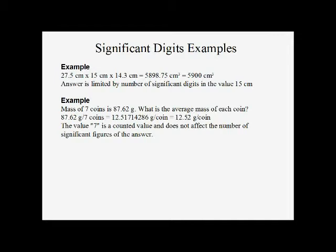If we weigh seven coins and want the average mass, where total mass is 87.62 divided by seven coins — seven coins is a counted number, so it is unlimited in significant digits. We have four significant digits from our 87.62. Our calculator gives a long number, but we round down to four significant digits, ending up with 12.52.